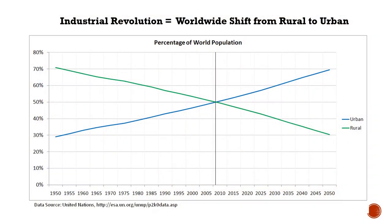This is a graph representing the continuing worldwide move from rural to urban from 1950 and projected into the future. In 2012, we passed an important milestone — there are now more people living in urban environments around the world than rural ones. This trend is expected to continue into the future. By 2050, it is estimated that 70% of humans will be urban dwellers.